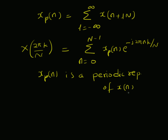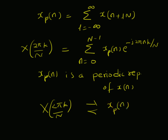Note that x_p(n) is a periodic repetition of x(n). For any given aperiodic signal x(n), x_p(n) is always periodic. It forms a Fourier transform pair with X(2πk/N). So when given X(2πk/N), you can directly recover x_p(n) by simply applying the inverse Fourier transform on X(2πk/N).